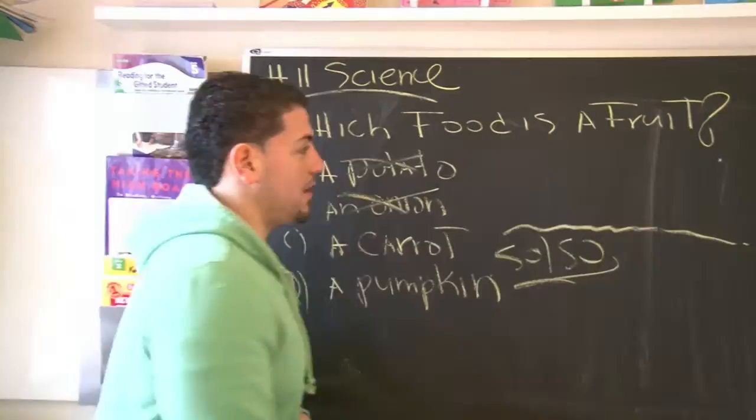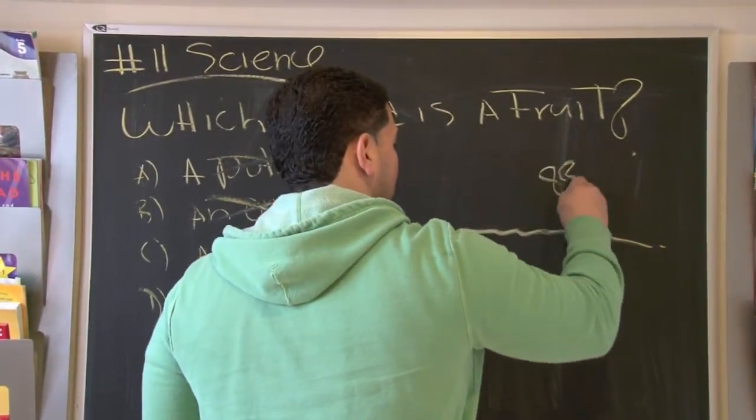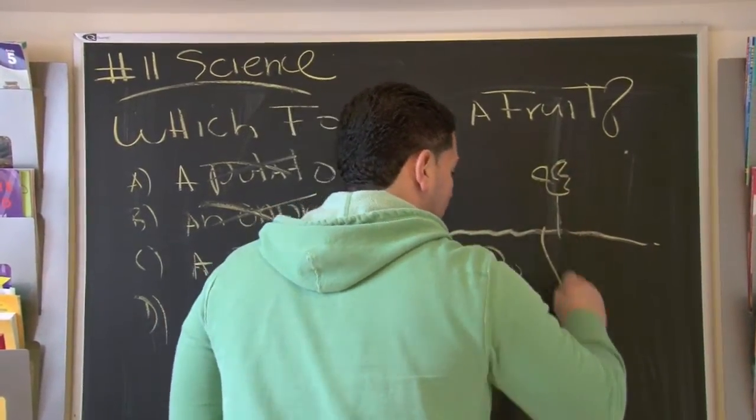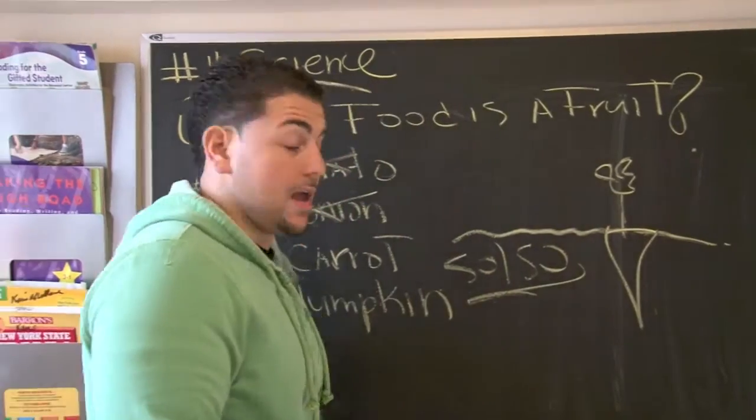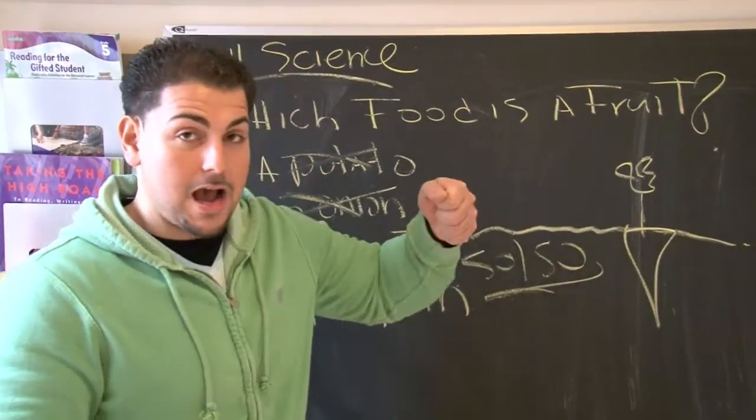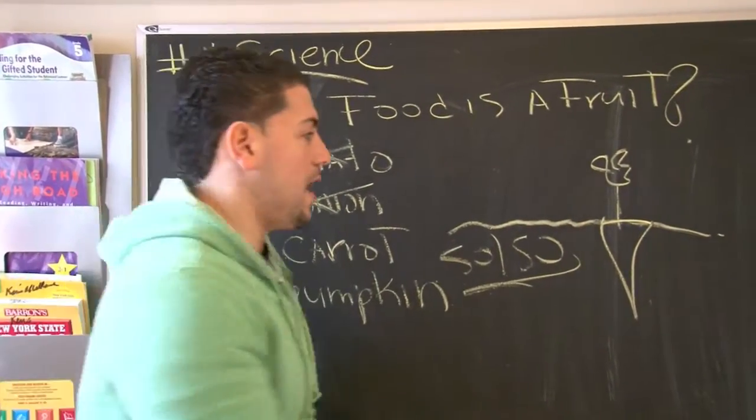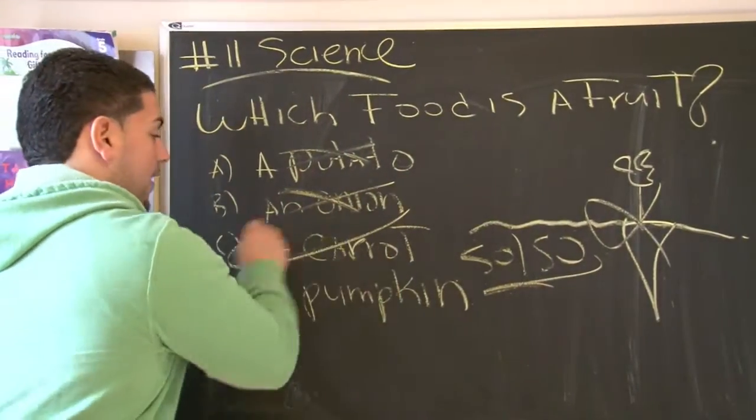A carrot. Now think about a carrot. A carrot's got this nice green thing, but for the most part, it's underground. It grows underground. You've got to pull it out. Can that be a fruit? No way. Carrot is out.